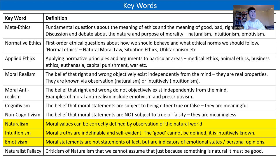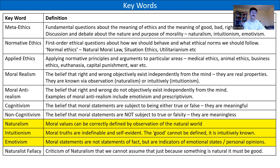Emotivism is the idea that moral judgments are just expressions of opinion — expressions of an emotion, not factual statements. A.J. Ayer believes that ethical statements are meaningless, that they are just personal preferences. In the same way you might say you like a certain food, you might say whether you like murder or stealing. With an emotivist perspective, any ethical judgment is simply an expression of personal opinion, because right and wrong do not objectively exist — we decide in the moment, based on our feelings.